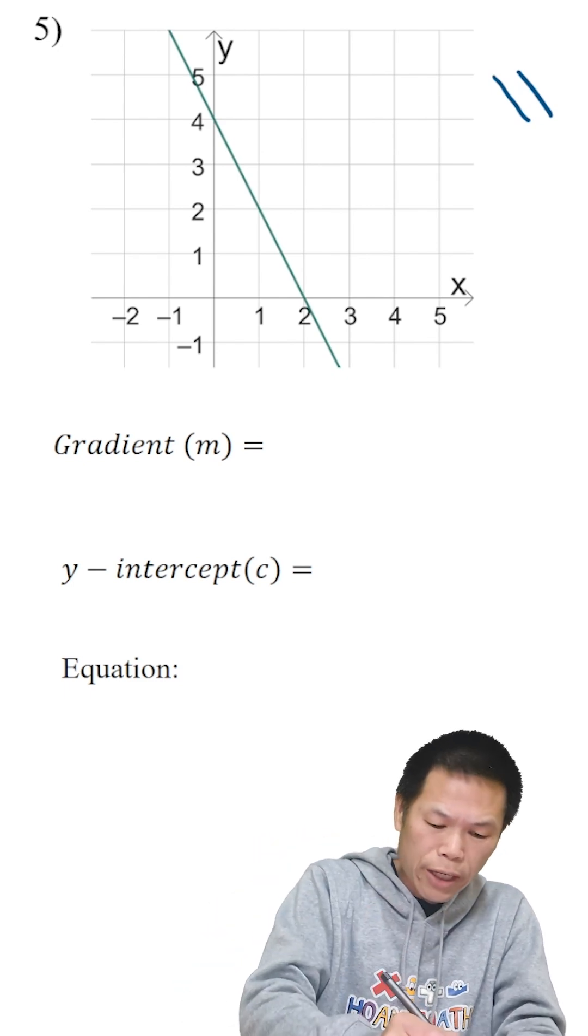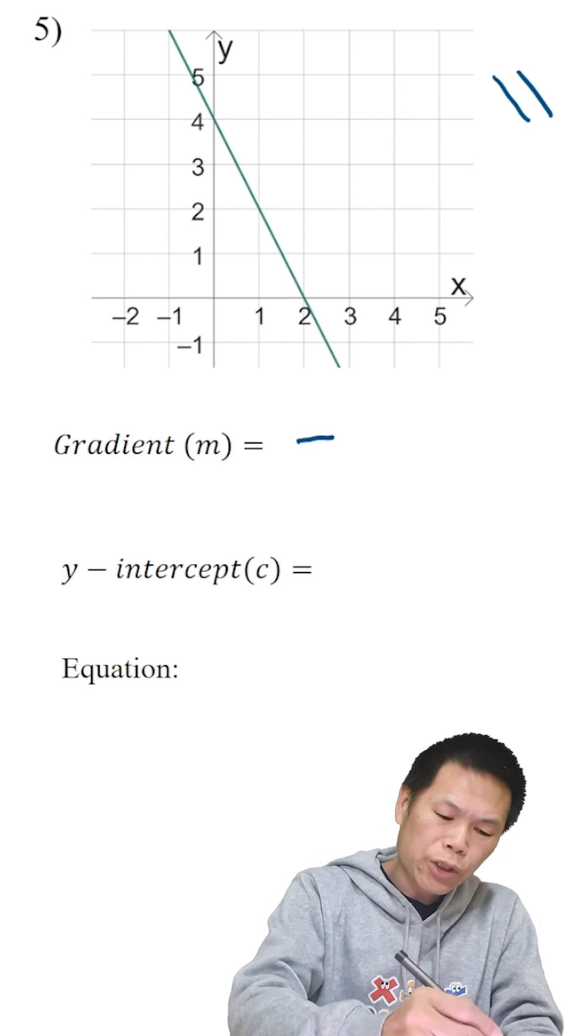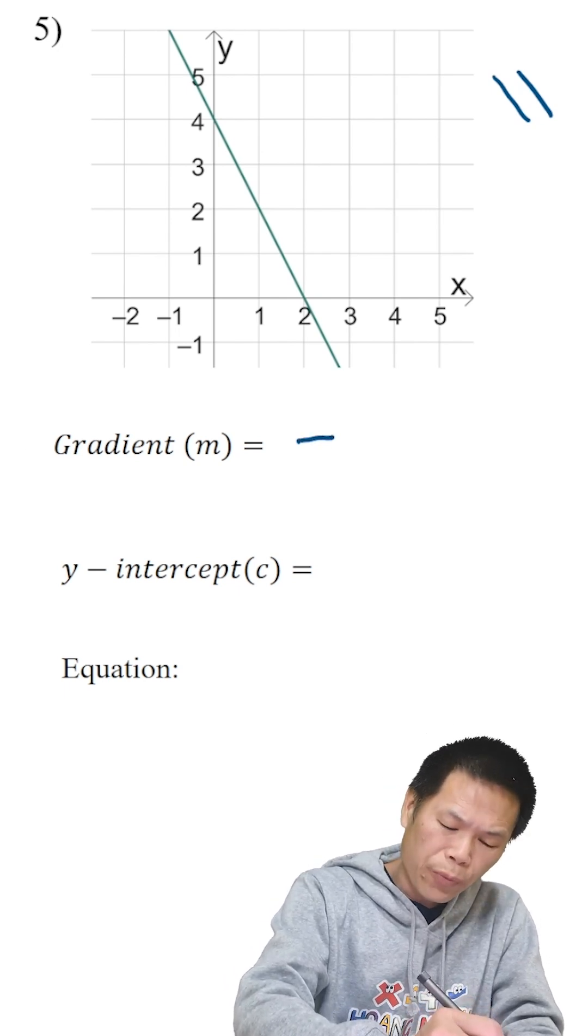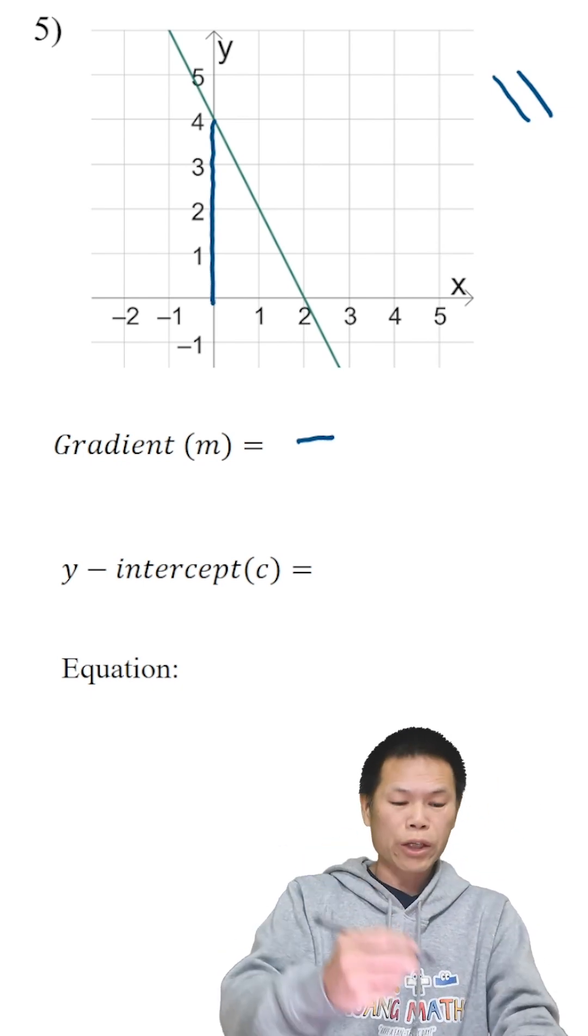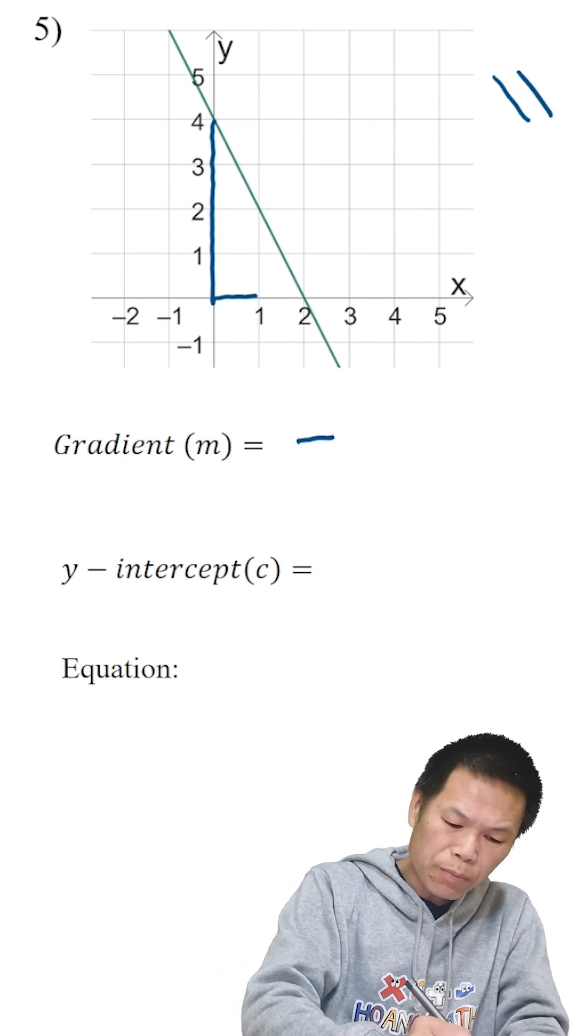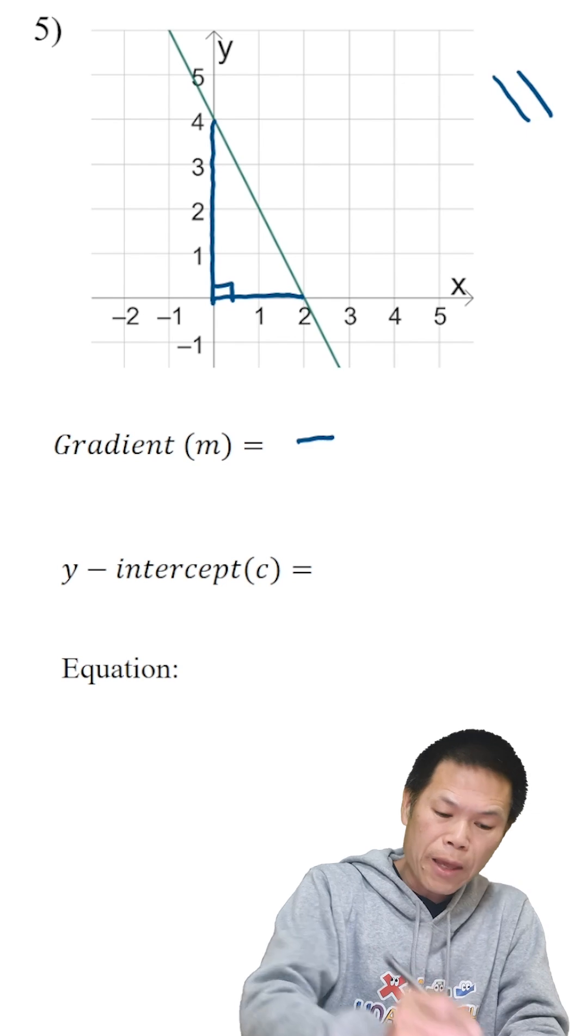Let me just write negative first. And then we just draw a triangle. Let me quickly draw it. Of course, you can draw a smaller triangle if you wish, but I'll just draw it the quick way, like this.